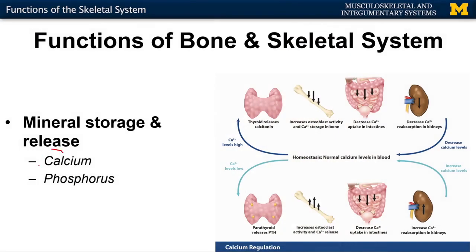The three functions I just mentioned are what we all typically think of when we think of the skeletal system. But there are other functions that are just as important, particularly in terms of keeping homeostasis within the body. One of the main ones is mineral storage and release. We've all heard 'drink your milk, get that calcium into your bones,' because bone is going to store 99% of the calcium in your body.